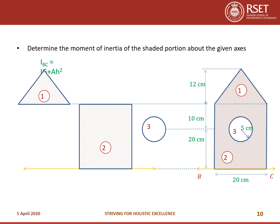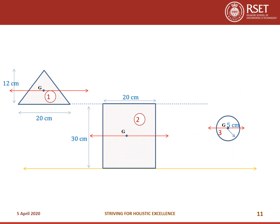We take each standard figure separately without changing their locations with respect to the axis BC. We then draw an axis through the centroid of each standard figure parallel to BC — these are G1, G2, and G3 for the triangle, rectangle, and circle respectively. For the first figure, the isosceles triangle, the centroidal Moment of Inertia Ig1 equals b·h³ by 36, where h equals 12 and b equals 20, giving Ig1 equals 960.